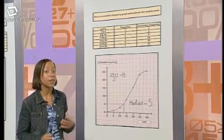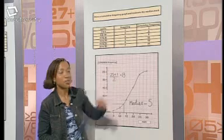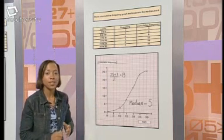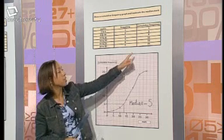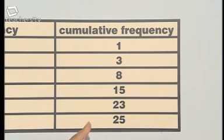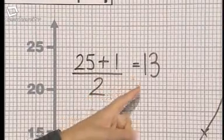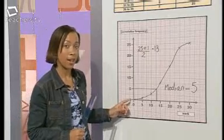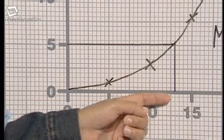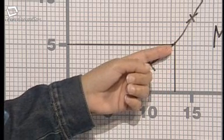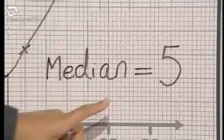Use the data given to draw a cumulative frequency graph and estimate the median mark. I plotted the upper value of each interval against the cumulative frequency and got a graph that looks like this. The median is the middle value of the data. To find that, I took the highest value of the cumulative frequency from my table, which is 25. I added 1 and divided by 2 to get 13. The median is the 13th value. To find that, I read up from 13 on the horizontal axis to the curve and across to the vertical axis, giving me a median mark of 5.